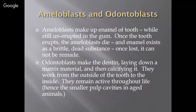Odontoblasts make the dentin. They lay it down in a matrix material, just like bone, and then calcify it. They work from the outside of the tooth to the inside and remain active throughout life. It continues to lay down dentin from the outside in — that's why we get a smaller pulp cavity in older animals.